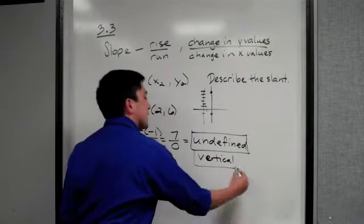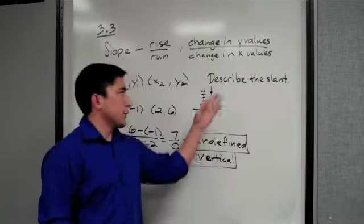If I were to connect those dots, the way I would describe the slant is this would be vertical. One hundred percent of the time when you have an undefined slope, the way you describe it is that it's vertical - going straight up and down.